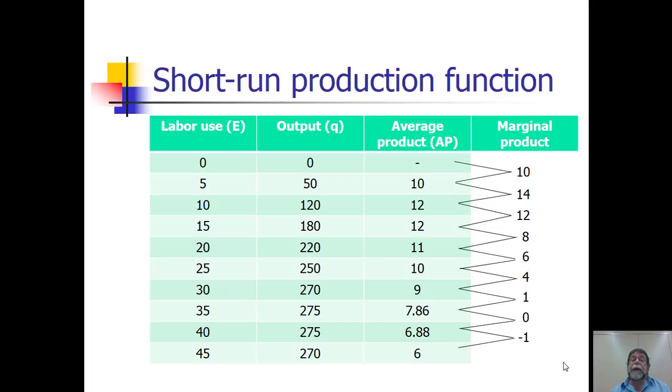Marginal product of labor has been added to the short run production function here. And notice, we're measuring the marginal product for intervals. When labor use goes from 0 to 5, output goes from 0 to 50, so in the interval between 0 and 5 units of labor, the marginal product would be the change in output, 50, divided by the change in labor, 5. And so we have 50 over 5, which is just 10. Similarly, when we go from 5 to 10 units of labor, we end up with output increasing by 70. So we have a change in output in the numerator of 70, a change in labor in the denominator of 5, and 70 over 5 is 14.